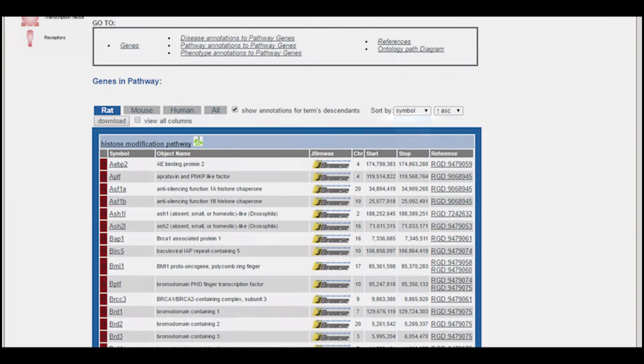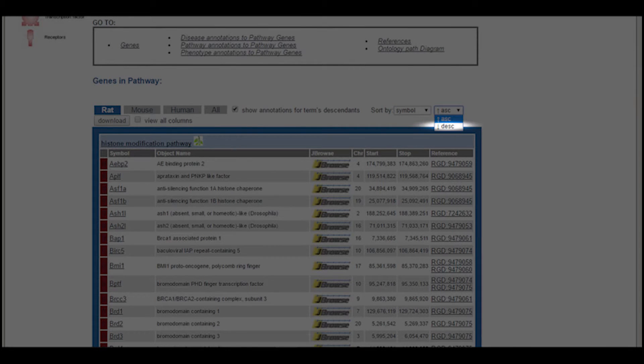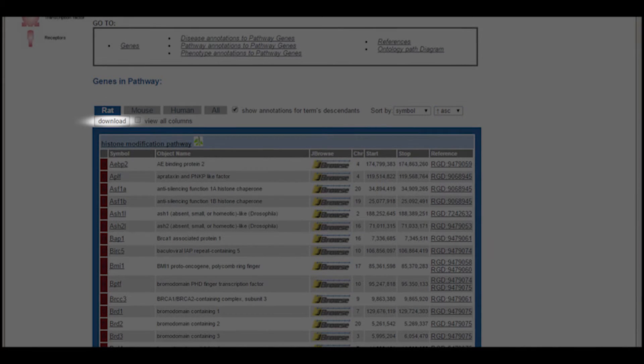You can choose to sort the table by symbol, name, position, or reference in either ascending or descending order. You can also download the list formatted as a tab delimited text file which can be opened in Excel or another spreadsheet program.